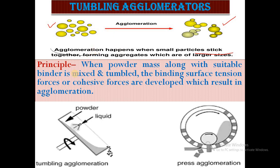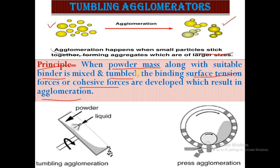Now we will see the principle of tumbling agglomeration. When a powder mass along with a suitable binder is mixed and tumbled, binding surface tension forces or cohesive forces are developed, which result in agglomeration. In tumbling agglomeration, small powder materials combine together in the presence of a suitable binder.